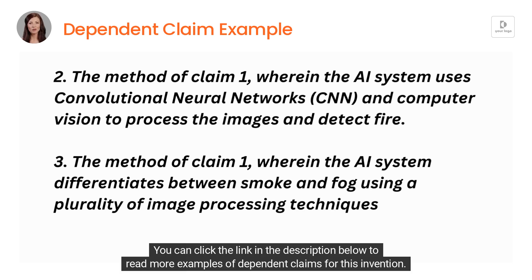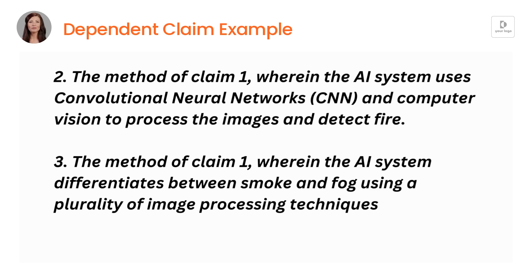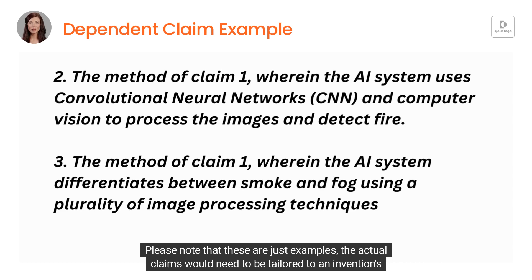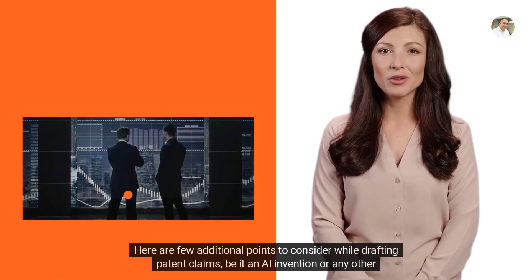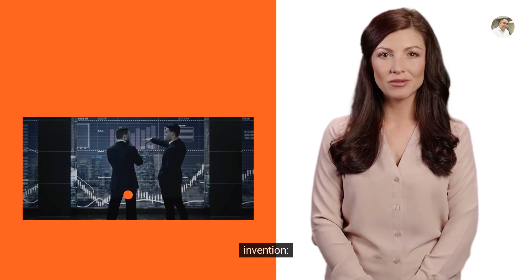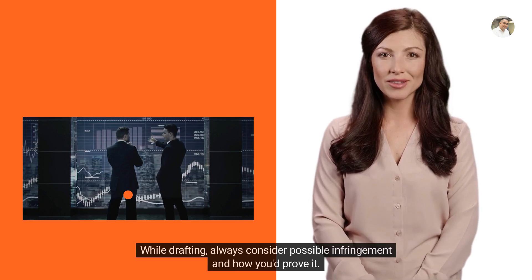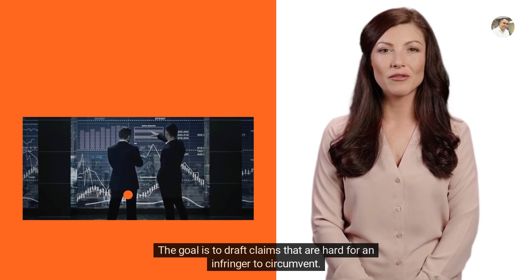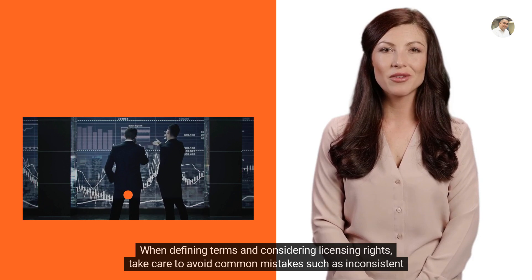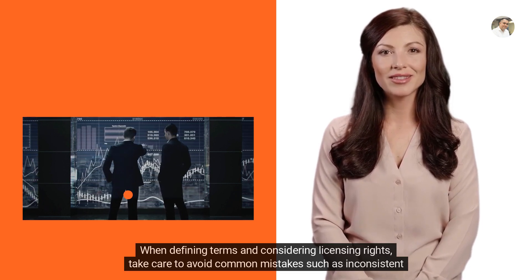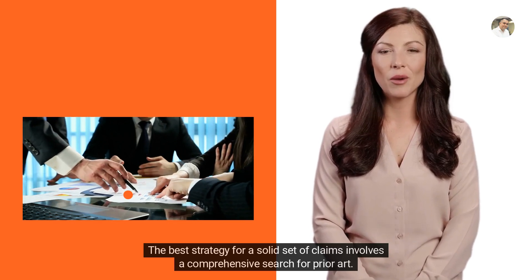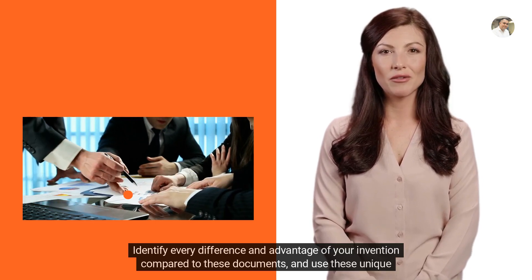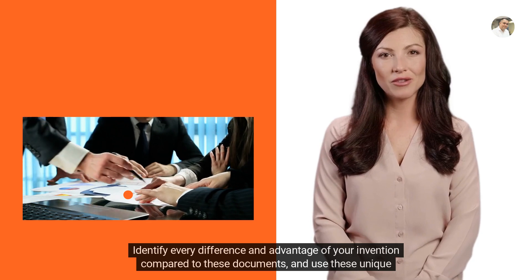You can click the link in the description below to read more examples of dependent claims for this invention. Please note that these are just examples — the actual claims would need to be tailored to an invention's specific features and applications. Here are a few additional points to consider while drafting patent claims, be it an AI invention or any other invention. Always consider possible infringement and how you'd prove it; the goal is to draft claims that are hard for an infringer to circumvent. When defining terms and considering licensing rights, take care to avoid common mistakes such as inconsistent terminology, too much or too little detail, misuse of 'and' or 'or', multiple sentences in a claim, and using trademarks. The best strategy for a solid set of claims involves a comprehensive search for prior art. Identify every difference and advantage of your invention compared to these documents, and use these unique features in the body of your claim.